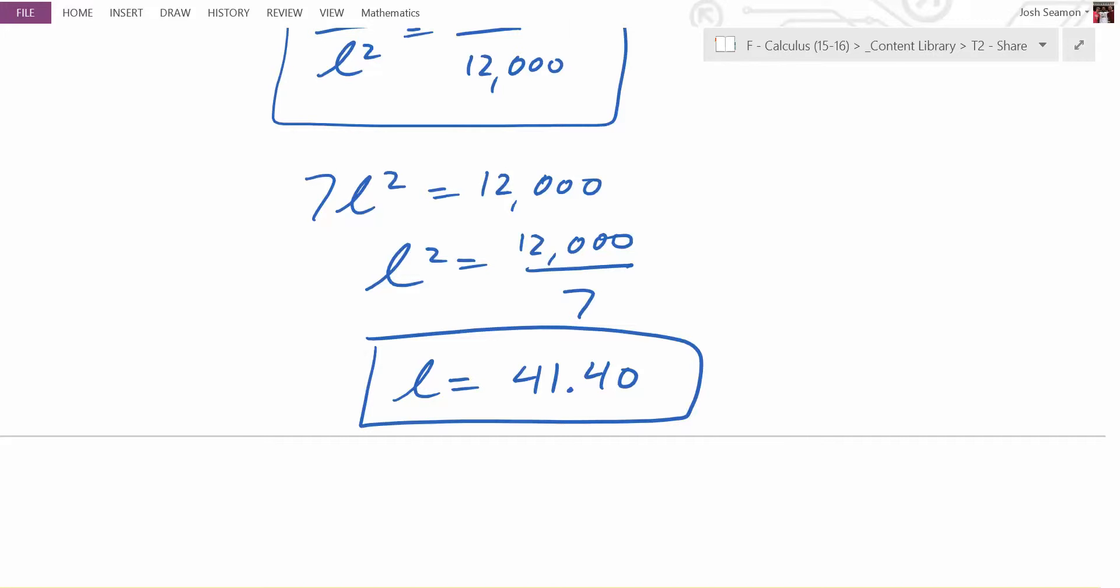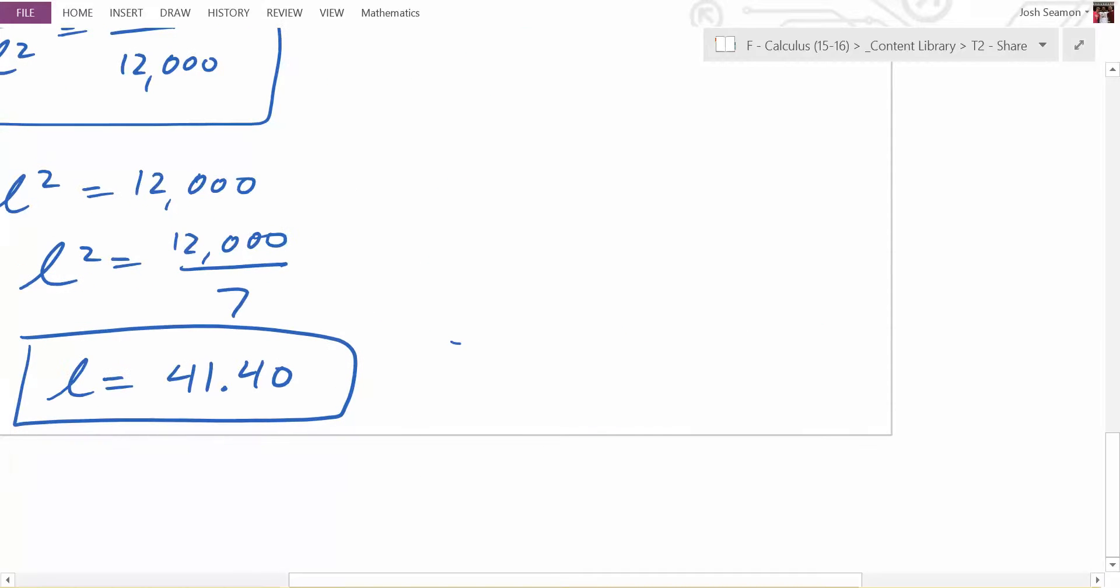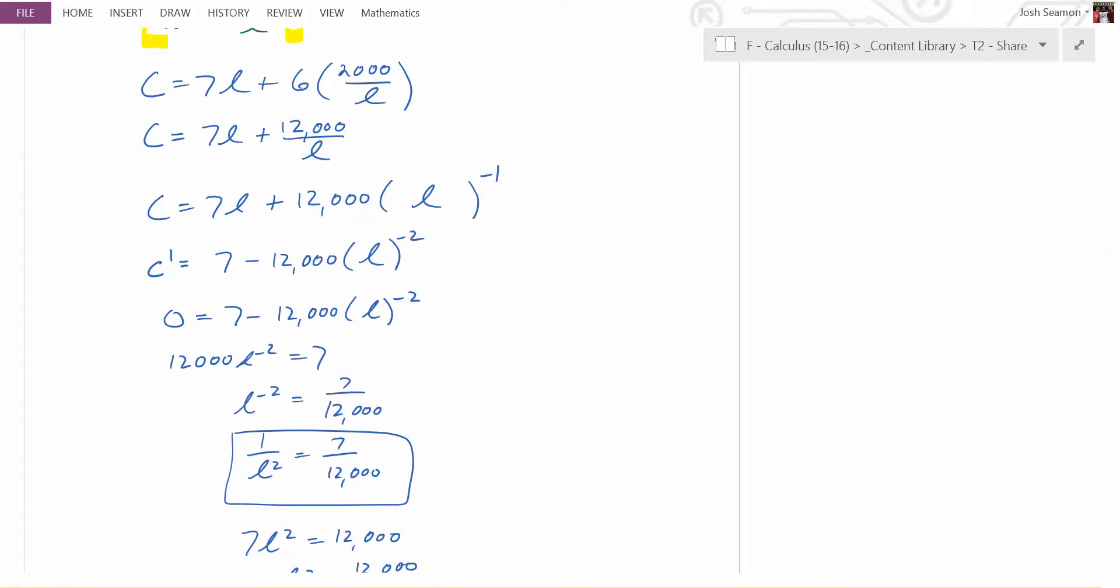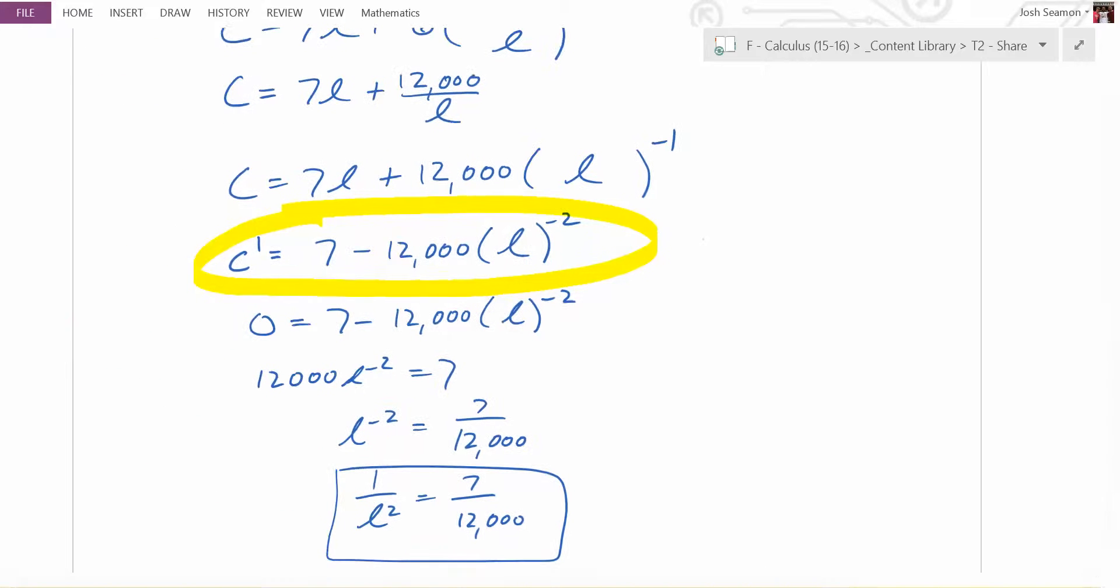It could be a maximum. It could be a minimum or maximum. So what do we need to make? A sign chart for the derivative. So we have L and we want cost prime. Where's cost prime here? Right here. So we're doing, we have a sign chart here. And what do we have? 41 point 4, zero.